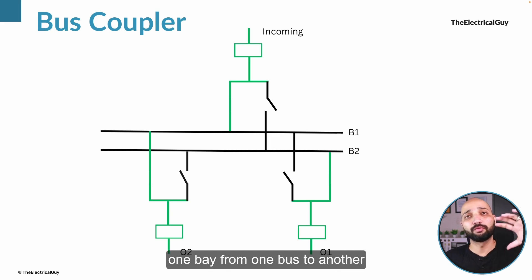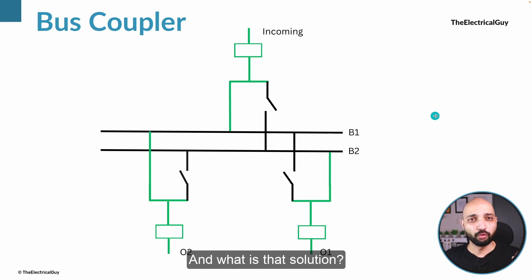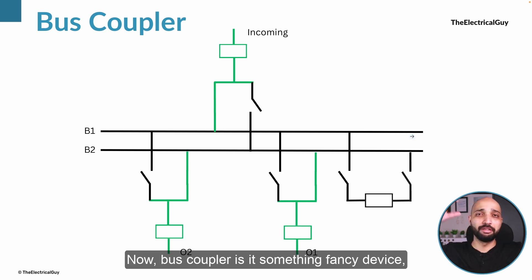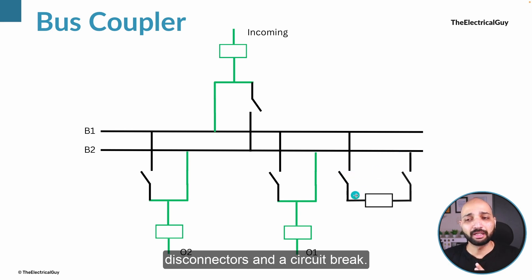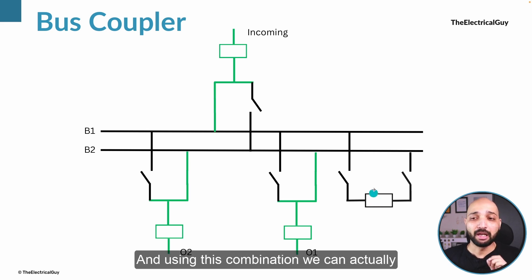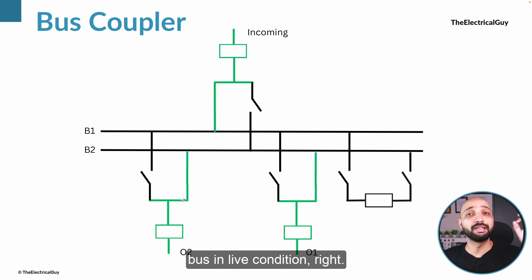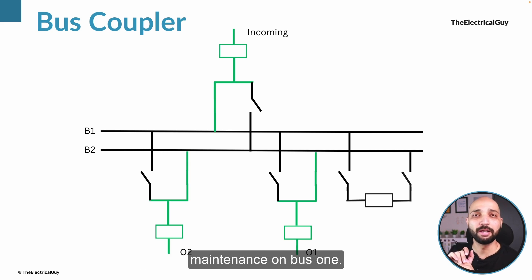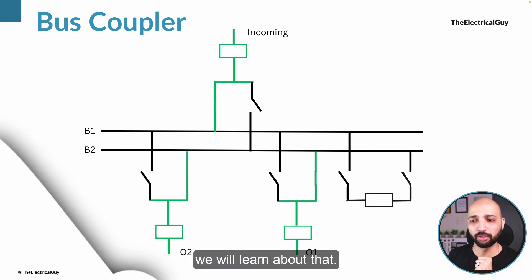There is a simple solution that lets you transfer one bay from one bus to another bus in live supply, without taking any shutdown — and that solution is the bus coupler. The bus coupler is not a fancy or complicated device; it is simply a combination of some disconnectors and a circuit breaker. Using this combination we can transfer one bay from one bus to another in live condition. Even if you need to carry out maintenance on bus one, you can transfer all the load to bus two and keep the system running.